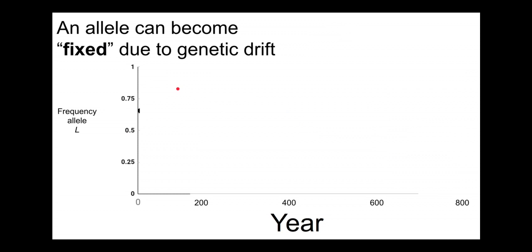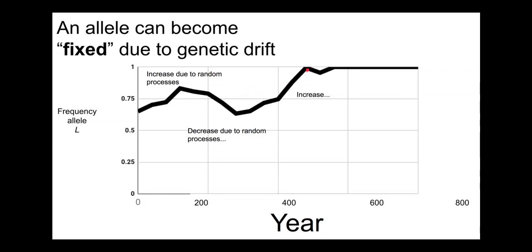Something that's important to know is that alleles can become fixed due to genetic drift. Let's imagine another scenario where for 200 years the frequency of the allele increases for a while and then decreases just due to random reasons. Maybe a bunch of the people who were lactose-tolerant homozygous died and didn't pass on their genes. So the frequency of the allele goes down, and then it goes back up due to random processes, and then it goes up and then it stops.